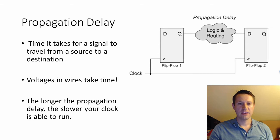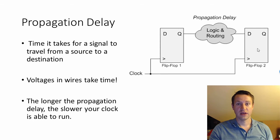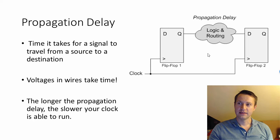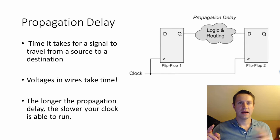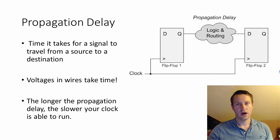Propagation delay talks about what happens when you have a source flip-flop and a destination flip-flop. It does take time for voltages to travel down wires. The rule of thumb is around one nanosecond per foot. So if you have a foot of wire and you put a pulse of voltage across it, it'll take about a nanosecond to get to the other side — it might not be exactly a nanosecond, but that's about how long it takes.